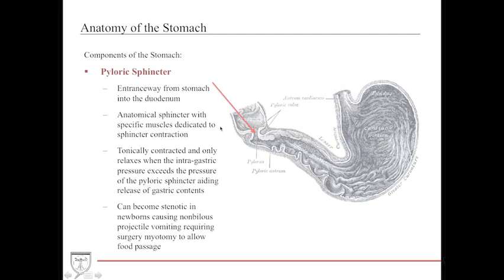The pyloric sphincter is the entranceway from the stomach into the duodenum at the pylorus. Unlike the lower esophageal sphincter, this is an anatomical sphincter with specific muscles for contraction. It is tonically contracted — meaning always contracted — and only relaxes when pressure inside the stomach is high enough to push contents past the sphincter, aiding release of gastric contents.